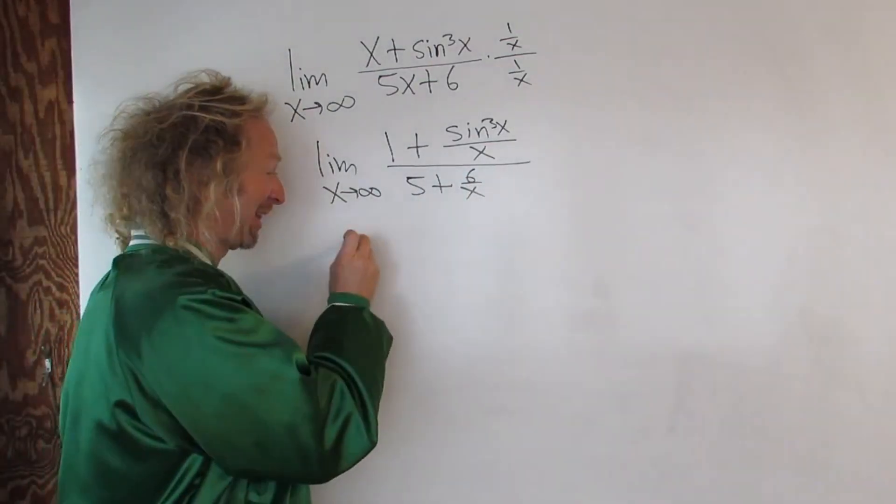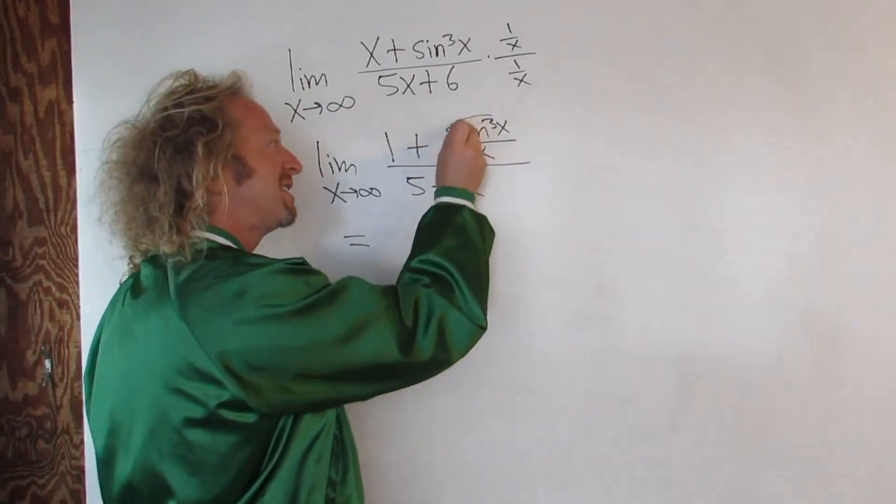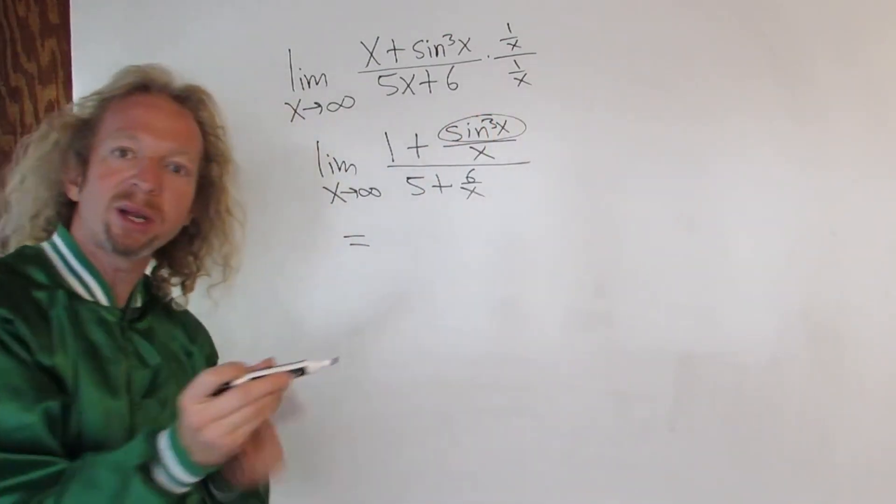Yeah, good stuff. Looks a lot better now, right? Because now it's clear. This is bounded between negative 1 and 1.